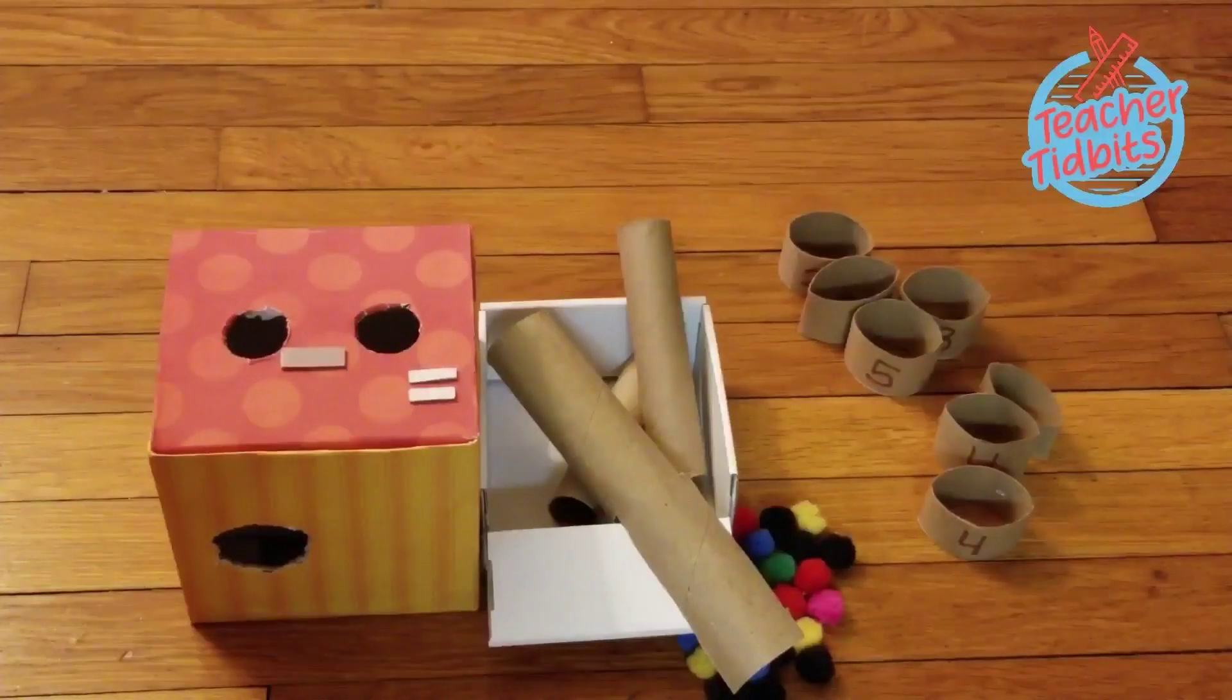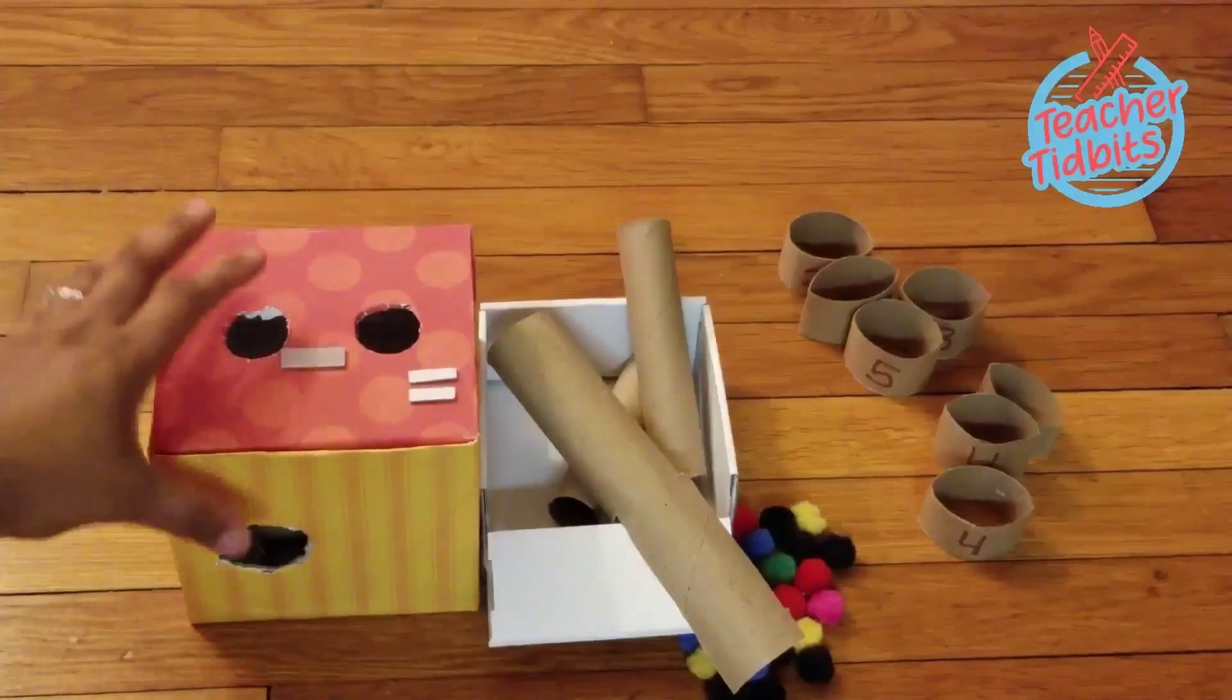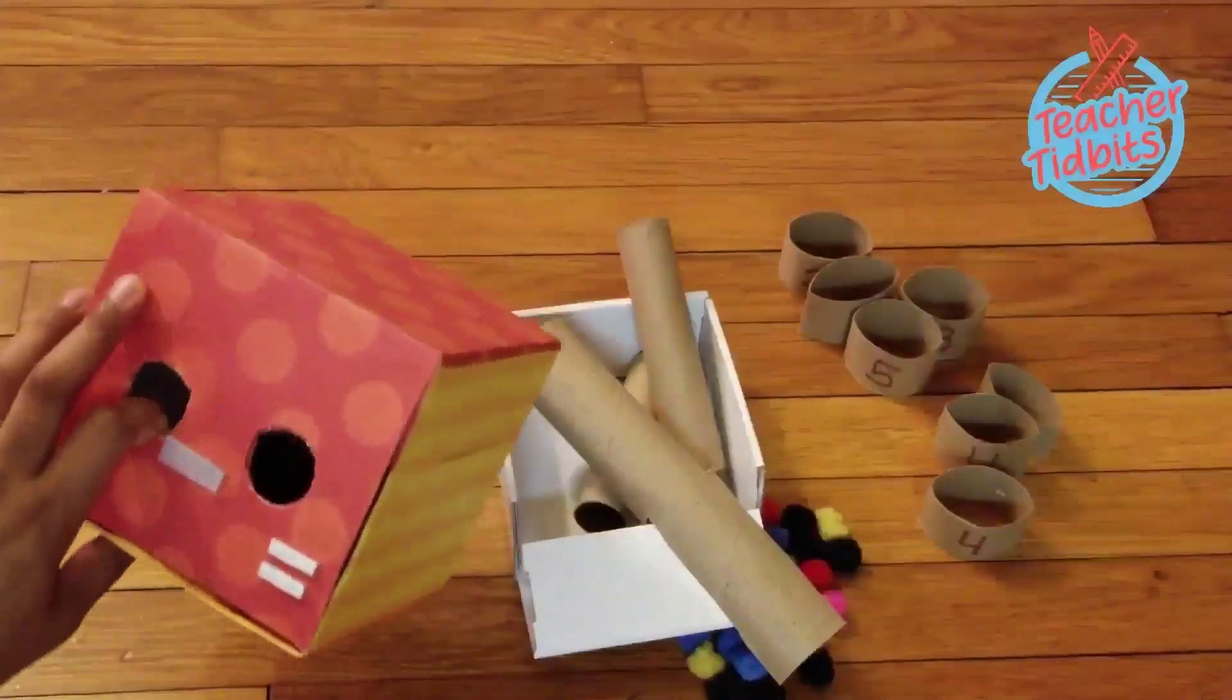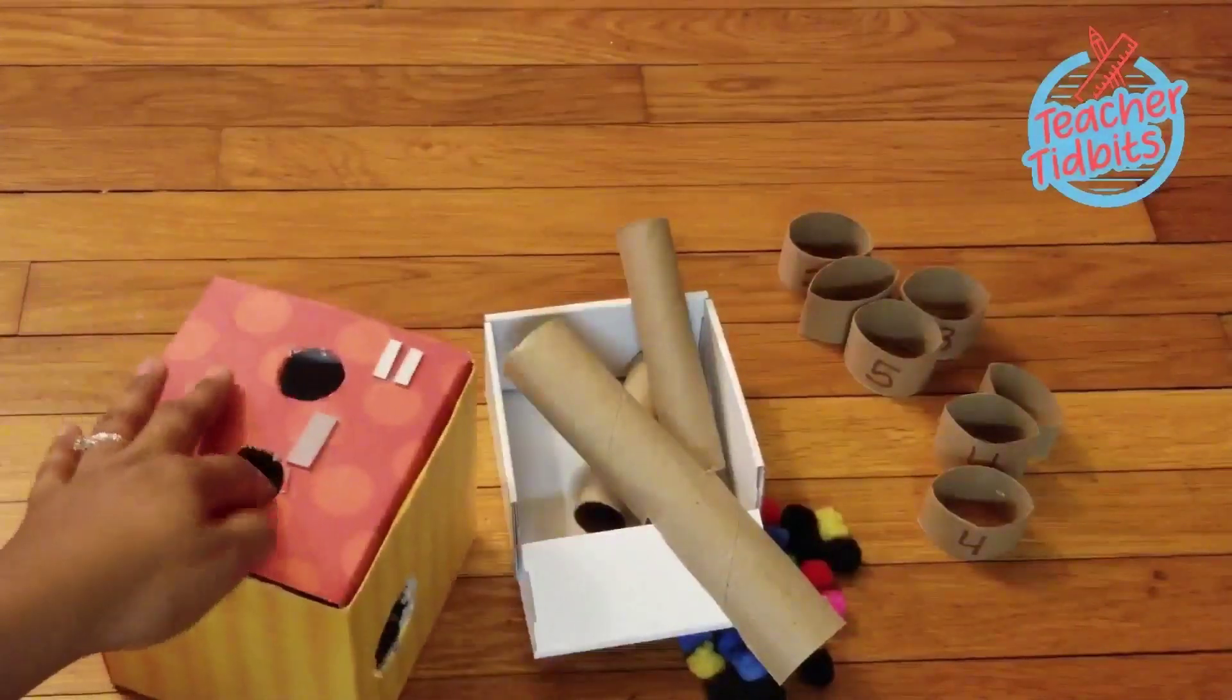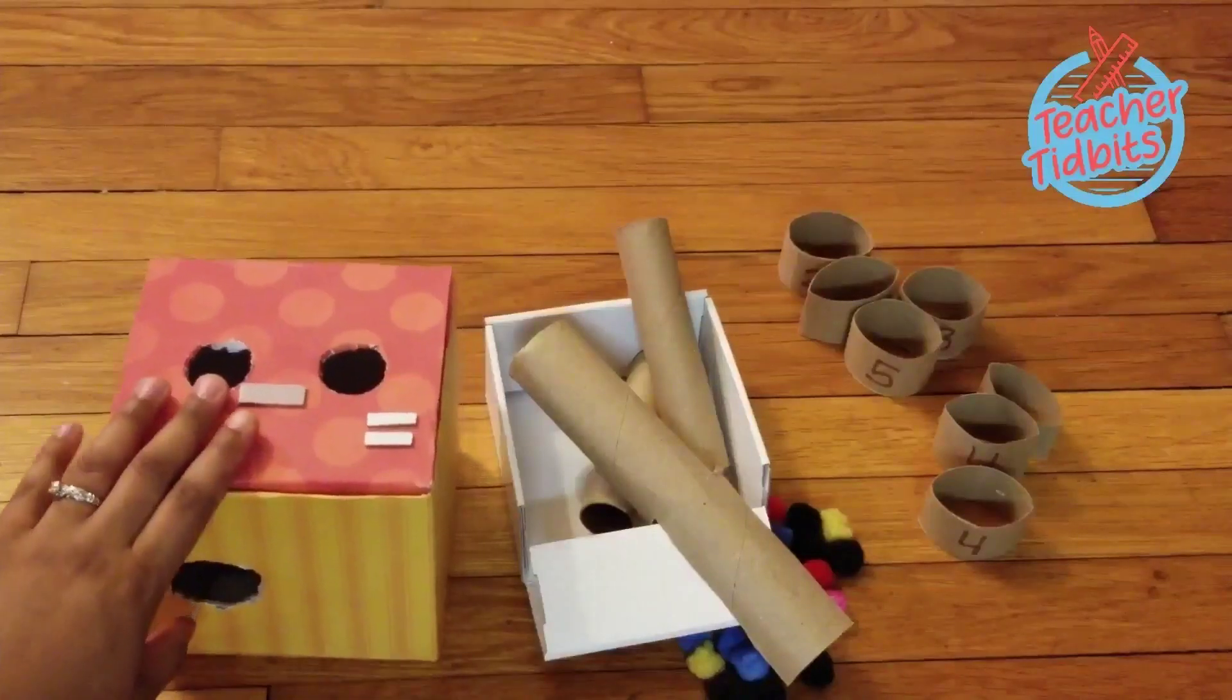So now that I have my box ready, I went ahead and put the subtraction sign as well as the equal sign on top. I cut out two holes in the top and one at the side, and I'm going to show you guys how I put this together.